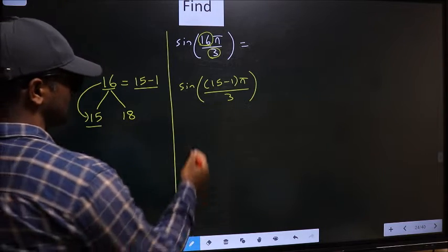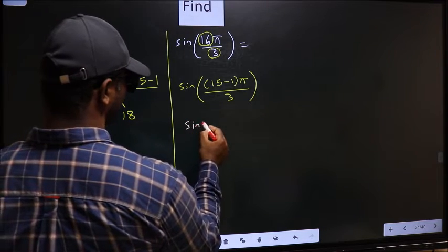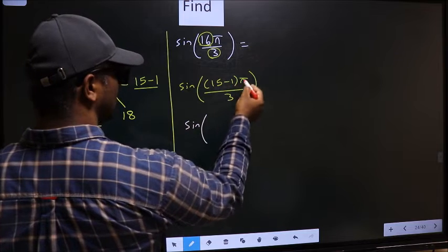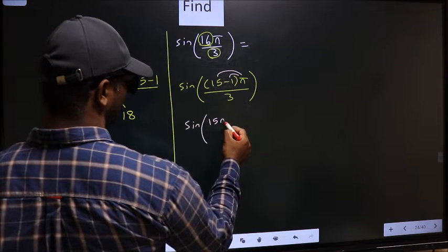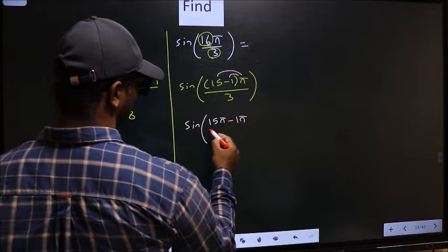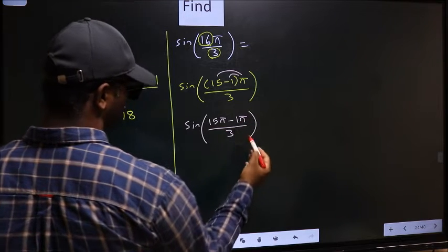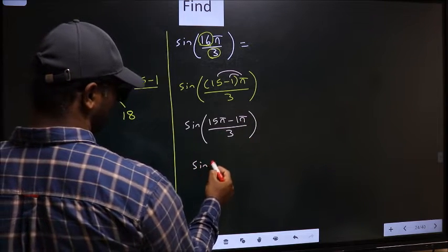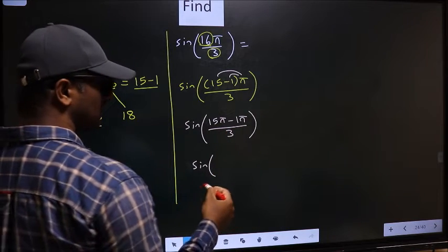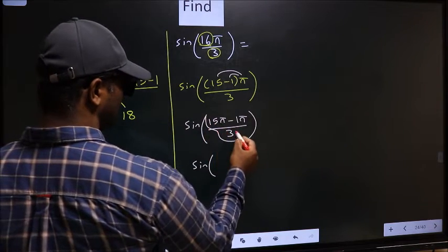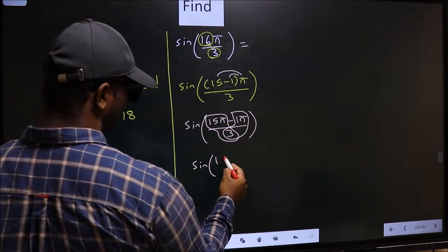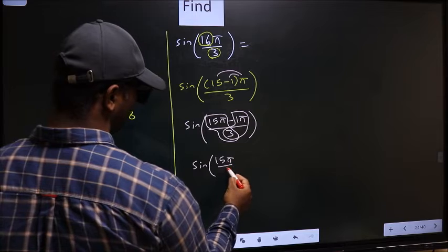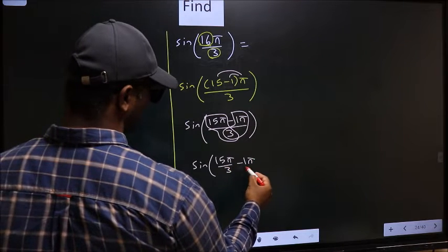Next, sin of, here you should open up the brackets, that is 15π minus 1π by 3. Next, sin of, now you should split the denominator in this way: that is 15π by 3 minus 1π by 3.